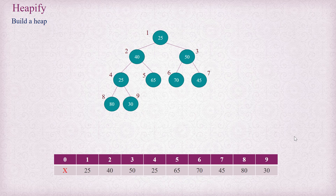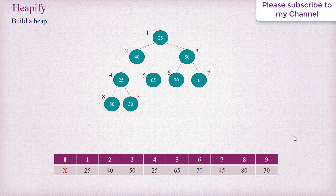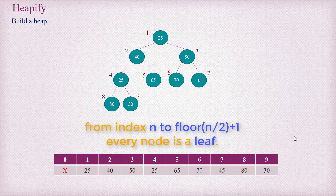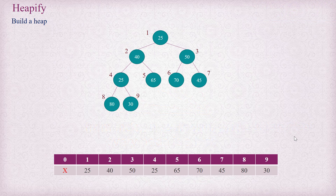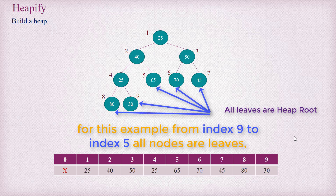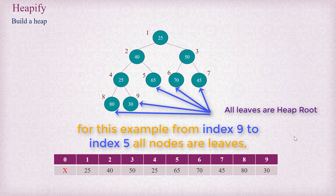Same for other leaves. Therefore, for any almost complete binary tree, all leaves can be considered as a heap root. We can find leaves up to index n divided by 2 plus 1 for any almost complete binary tree. As you can see for this example, n is 9 — the total number of elements — and n divided by 2 is 4.5; taking the floor value, that means 4 plus 1 is 5. So n by 2 plus 1 is 5, meaning all nodes from index 5 onward are leaves and are trivially heaps.